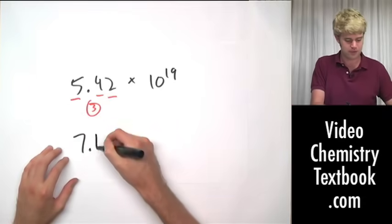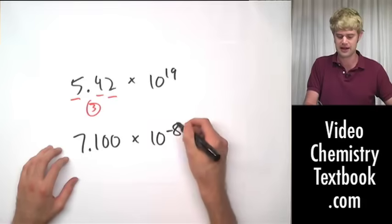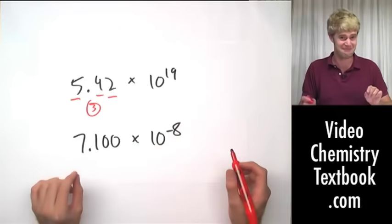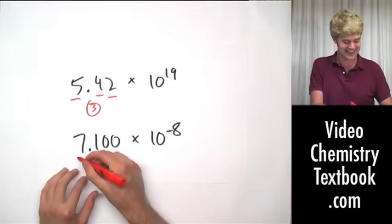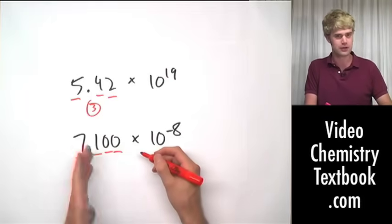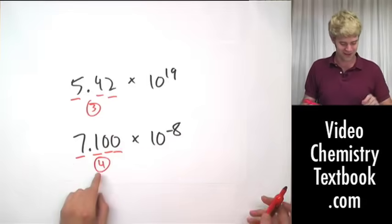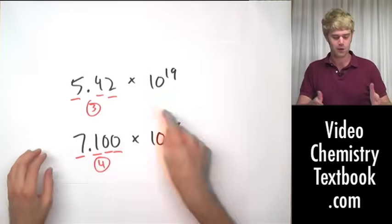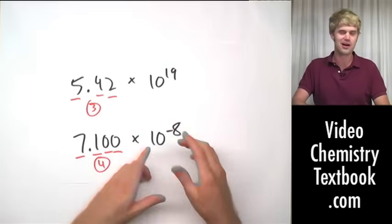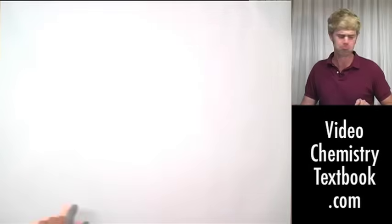Similarly, let's say we had 7.100 times 10 to the negative eighth. Again, we don't worry at all about the 10 raised to the power — we look only at the mantissa. 7.100: the zeros are significant because they're to the right of a decimal place. So, four significant figures in the mantissa, which means there are four significant figures in this number. Do not let the 10 to the whatever power confuse you.